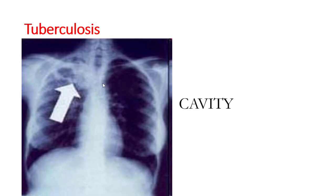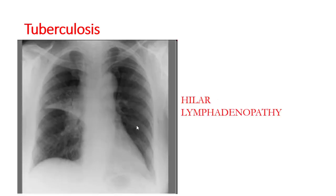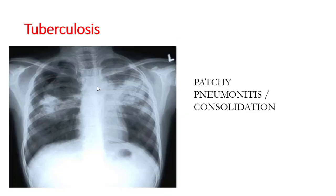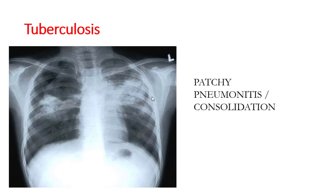Tuberculosis commonly occurs in the right upper lung field. Important findings include cavitation, hilar lymphadenopathy, and patchy consolidation. Miliary or disseminated tuberculosis has a typical chest X-ray appearance with diffuse small nodules throughout both lung fields.